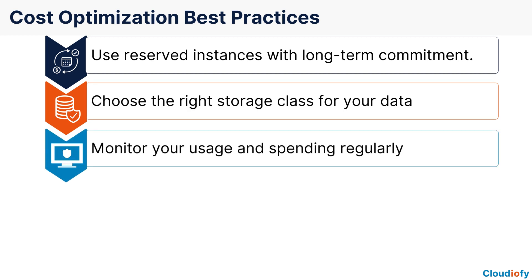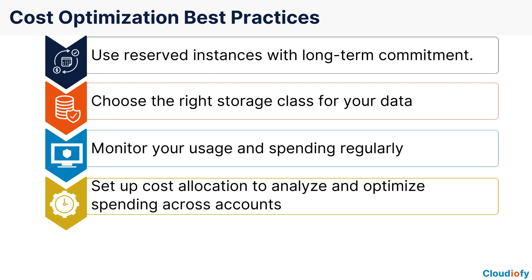Monitor your usage and spending regularly, which allows you to identify any unexpected spikes in usage or costs and take corrective action before they become too expensive. Set up cost allocation to analyze and optimize spending across accounts, which allows you to understand the spending patterns of different teams or departments and identify areas for optimization.